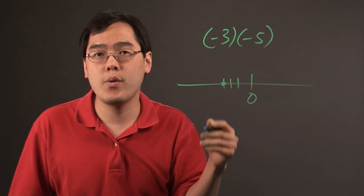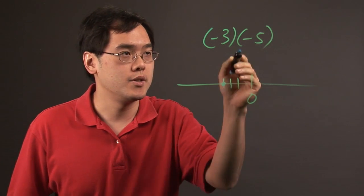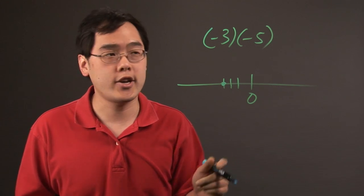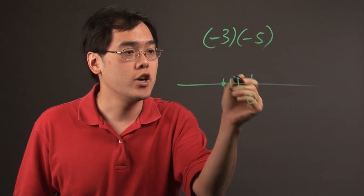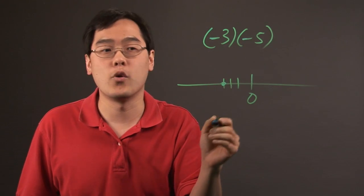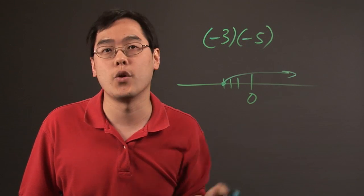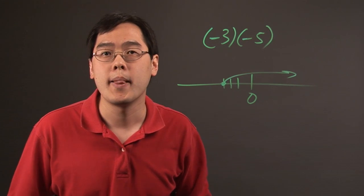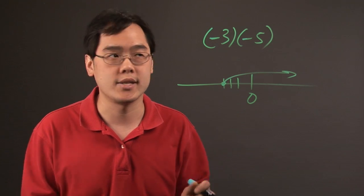But if you throw in another negative number into the mix in terms of multiplying, negative means you have to switch directions. So if you're already going left, another negative forces you to go in the other direction going rightward. So that's really part of the rationale as to why two negative numbers multiplied will give you a positive number.